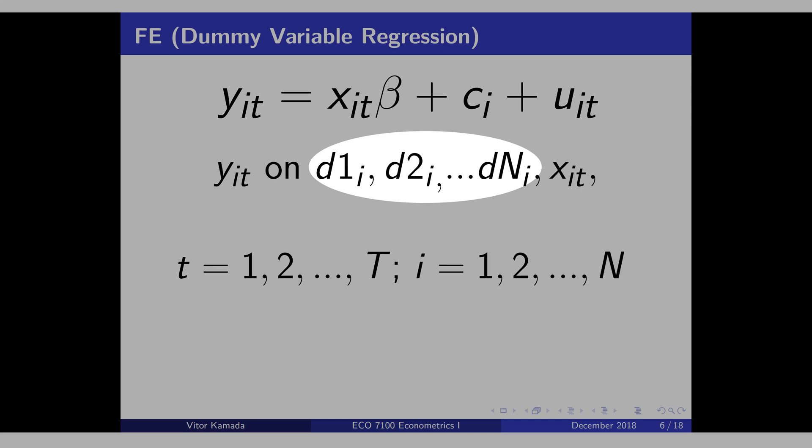When you are putting dummy variables for United States, Germany and etc., what you are doing is controlling for this Ci here.